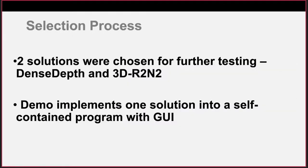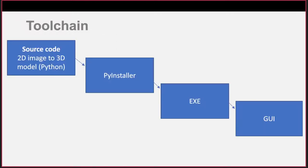We also had a hardware-based solution that involved using a LIDAR sensor on the Azure Kinect camera. We chose two techniques, DenseDepth and 3D-R2N2, to further test and evaluate. We wanted to create a demo showcasing how a user would be able to convert a 2D image to a 3D model. We chose DenseDepth for 3D object generation. The basic toolchain is to first get the source code of DenseDepth and compile it into an executable using PyInstaller.